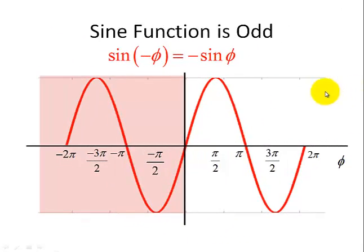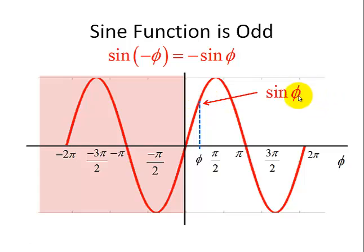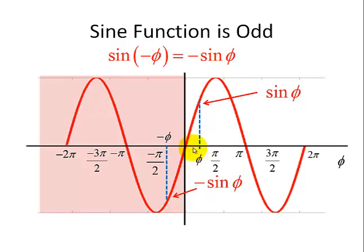Now let's show that the sine function is an odd signal, satisfying the mathematical relationship that the sine of minus phi is equal to the minus sine of phi. We can show this graphically, where the angle phi is given here and it has a particular value of sine of phi. Going in the opposite direction, minus phi, gives us by inspection negative sine of phi. So going in the opposite direction, these two values are just opposite in sign, hence it satisfies this mathematical relationship.